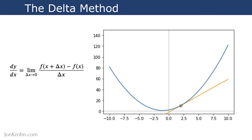Building up differential calculus, we started off in Calculus 1 by talking about limits, then used limits to learn about the delta method. The delta method is an approach based on limits that enables us to find the slope at any point along a curve by bringing another point infinitely close to the point we're interested in. As the difference between the two points approaches zero, we use limits to find exactly what the slope is at that point.